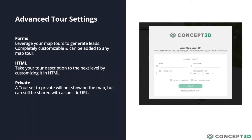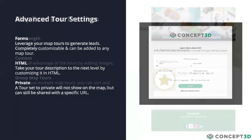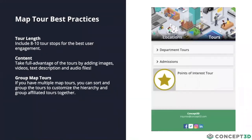Some best practices with map tours: the first is tour length. We've found the best sweet spot is about eight to ten stops. At this length you're keeping users engaged and making sure they're interacting with all the content you've included. When we get into the 20, 25, or 30 stop range, we start to see users drop off. We always like to go with the mentality of short and sweet, really packing a punch with those tours.